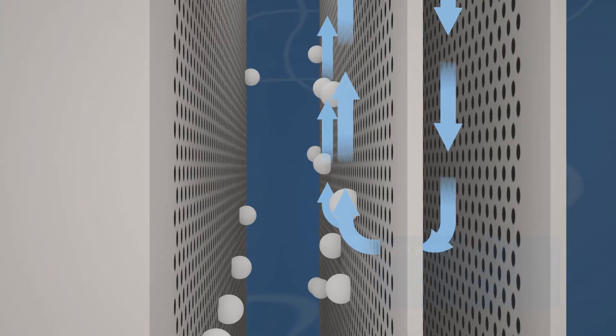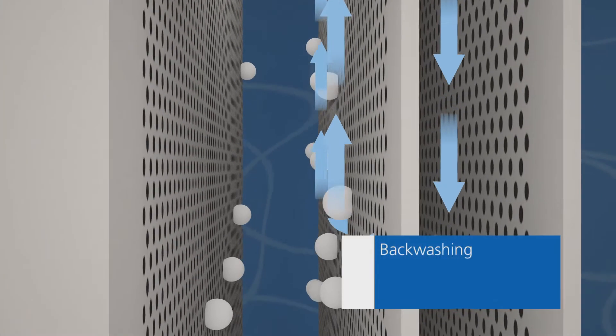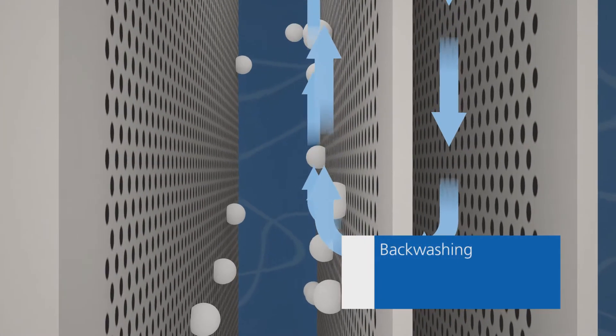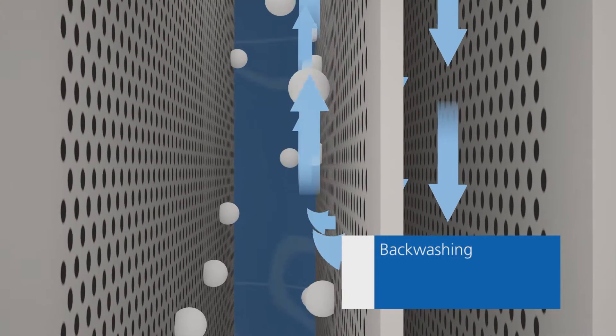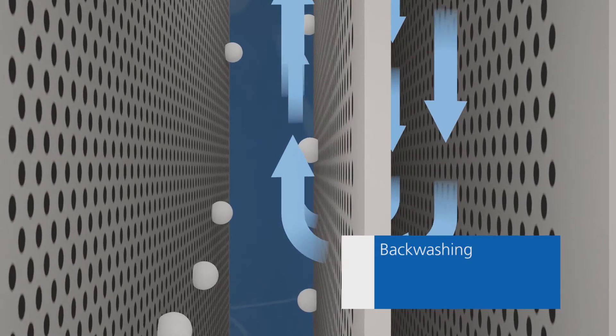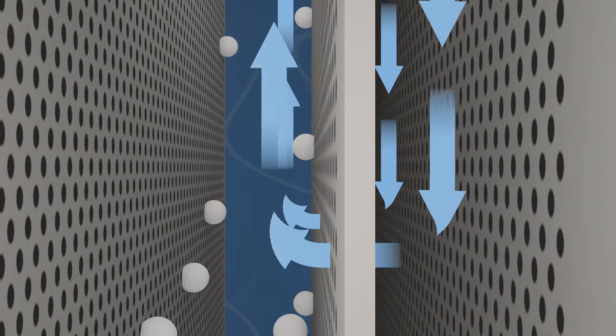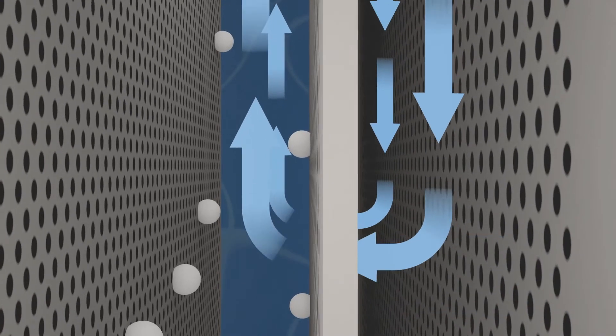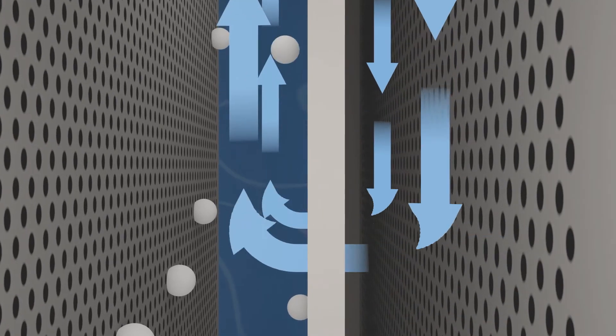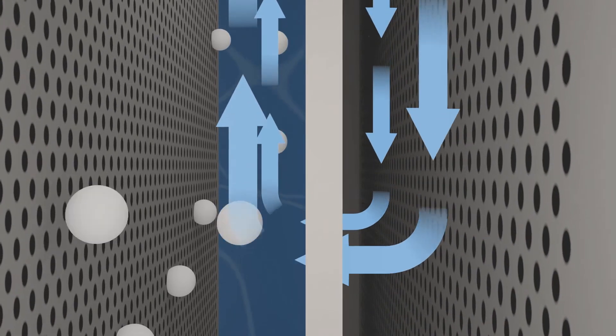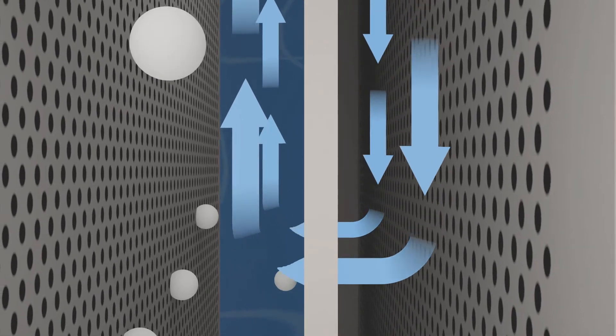The membrane can be backwashed into the reactor, meaning no backwash wastewater is generated. This ensures no product is lost or water wasted.